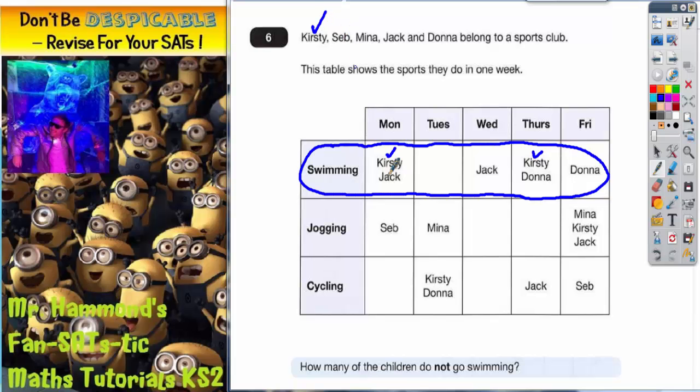Now for Seb. Seb, as you can see, does not appear in this row at all. So I'm not going to tick him because he doesn't go swimming. Mina does not appear in this row at all. So she does not go swimming. So I'm not going to tick her.